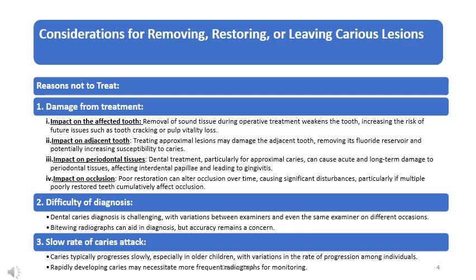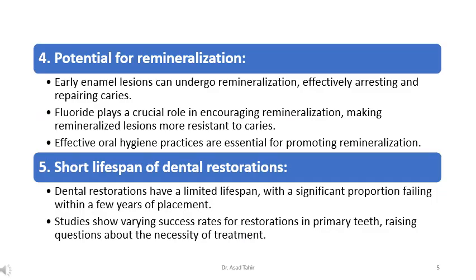Difficulty of diagnosis: dental caries diagnosis is challenging, with variations between examiners and even the same examiner on different occasions. Bite-wing radiographs can aid in diagnosis, but accuracy remains a concern. Slow rate of caries attack: caries typically progresses slowly, especially in older children, with variations in the rate of progression among individuals. Potential for remineralization: early enamel lesions can undergo remineralization, effectively arresting and repairing caries. Fluoride plays a crucial role in encouraging remineralization, making remineralized lesions more resistant to caries.